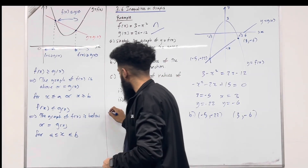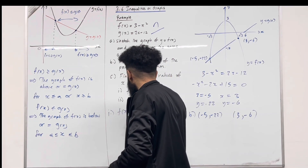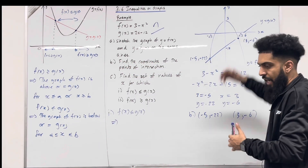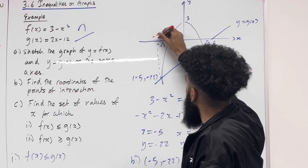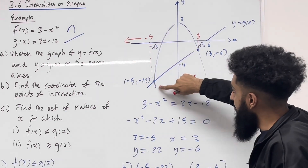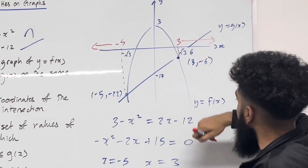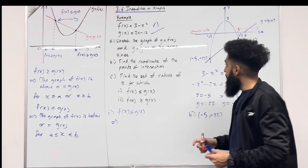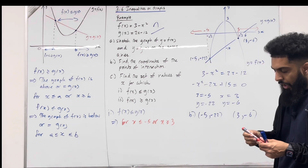Now let's look at Part C, part 1: find the set of values of x for which f(x) ≤ g(x). f(x) ≤ g(x) implies the graph of f(x) is below or equal to the graph of g(x). Going back to the graphs, the x-coordinates at the intersection points are -5 and 3. For x less than or equal to -5, the graph of f(x) is less than or equal to g(x). Also, for x greater than or equal to 3, f(x) is less than or equal to g(x). So this inequality is satisfied for x ≤ -5 or x ≥ 3.